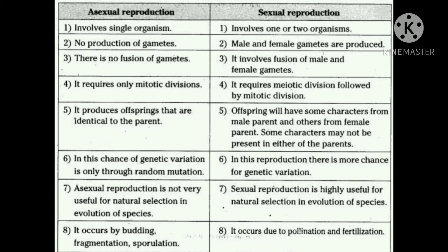Asexual Reproduction involves only a single organism. Since no gametes are needed, one organism is enough for Asexual Reproduction to occur — for example, binary fission in amoeba. In Sexual Reproduction, it involves either one or two organisms. There is no production of gametes in Asexual Reproduction.